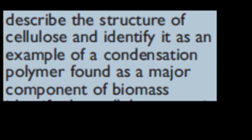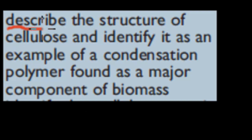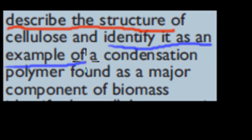Welcome back. In the last video we talked about the steps involved when it comes to creating a condensation polymer. In this video we're going to cover the next dot point which says describe the structure of cellulose and identify it as an example of a condensation polymer found as a major component of biomass. It has two parts: describe the structure, and identify it as an example of a condensation polymer. We'll cover both those parts in this video.